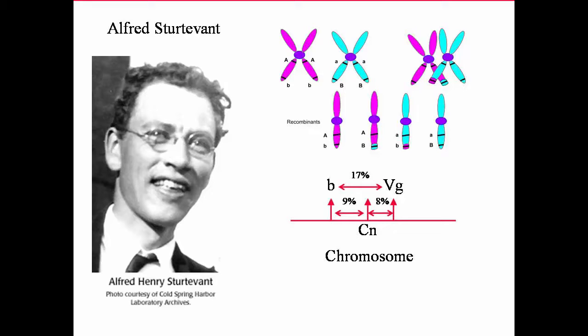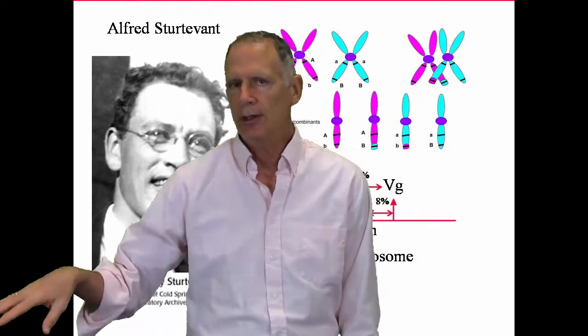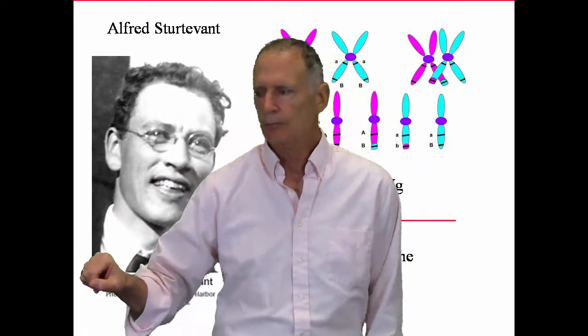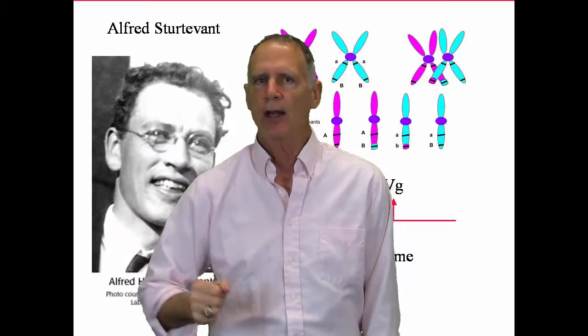So, what he does is, in order to test this, is he mixes cinnabar with black body. And the results are given here. Look at this, how sweet this worked out. It turns out that cinnabar is 8% away from the vestigial wing. That means it's 9% away from the black body, which is the result he got. So, he could then make a prediction and test it. And it tested out just the way he thought it was. This was very good evidence that he was right. So, he runs and he tells Morgan this. And, of course, Morgan's gone crazy over this result because it's so exciting.